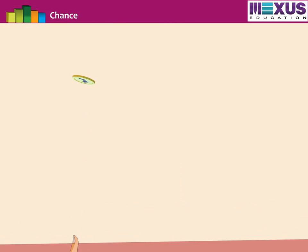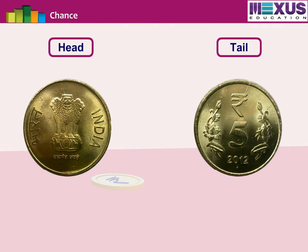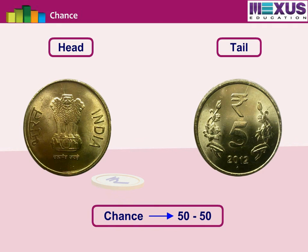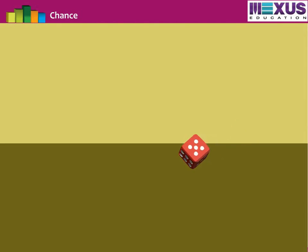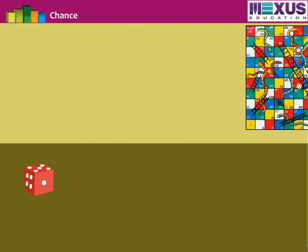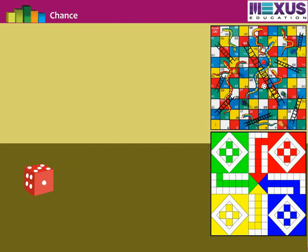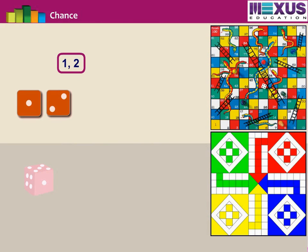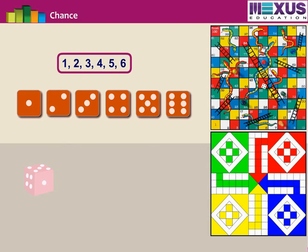Similarly, if you toss a coin, you will either get heads or tails. The chance of getting a head or tail is 50-50. If you toss the coin 100 times, you see that there is no certain pattern in which head or tail occurs — it is just a matter of chance. Similarly, if you toss a dice while playing a game like Snakes and Ladders or Ludo, there is a chance of getting 1, 2, 3, 4, 5, or 6 in any pattern.